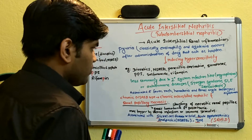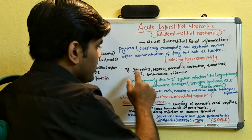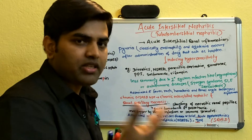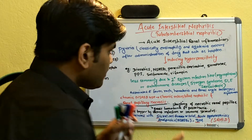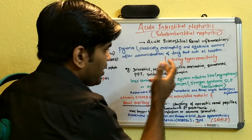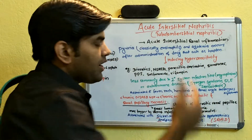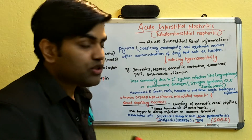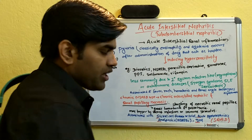Drugs that cause acute interstitial nephritis include diuretics, NSAIDs, penicillin and cephalosporin derivatives, quinine, proton pump inhibitors, sulfonamide group antibiotics, and rifampin. Although diuretics and NSAIDs have some nephrotoxic effect, penicillins, quinine, proton pump inhibitors, and sulfonamides are not directly nephrotoxic — they act as haptens, induce hypersensitivity, and cause inflammation of the renal interstitium.